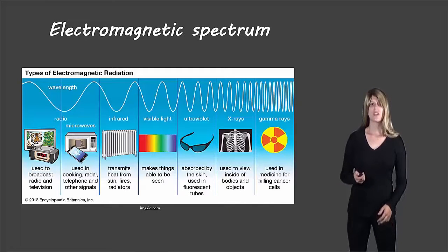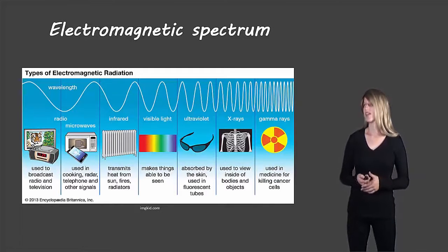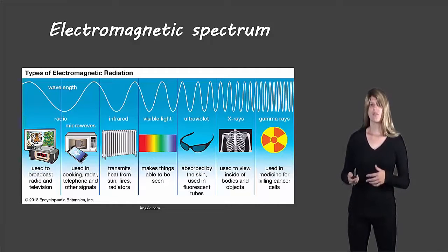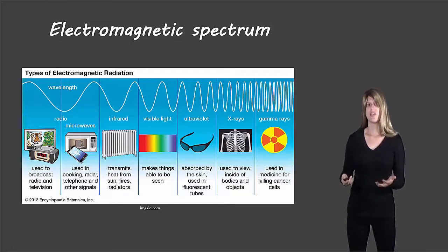So here's a picture of different regions of the electromagnetic spectrum. We have things like radio and microwaves. Radio waves are used for radio, TV, microwaves we use for our food, infrared radiation, which is radiation from heat often. Visible light is light that we can see.